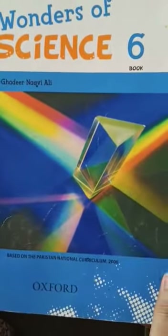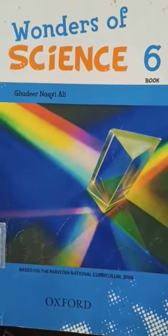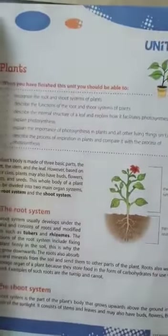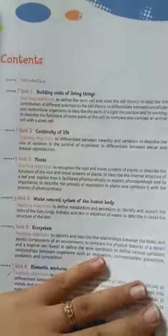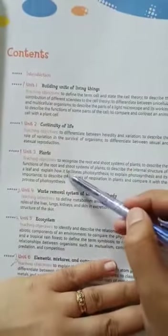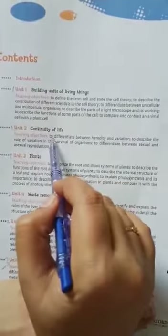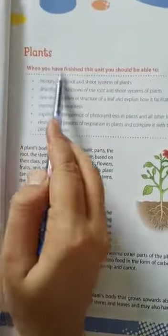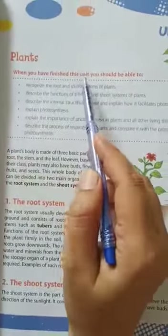Hello students of Level 6, Assalamualaikum. Today is your science class and we are going to start another chapter — that is Plants. We have done the chapter 'Building Units of Living Things' and now we are going to do Plants. 'Continuity of Life' we will do later. So let's start.